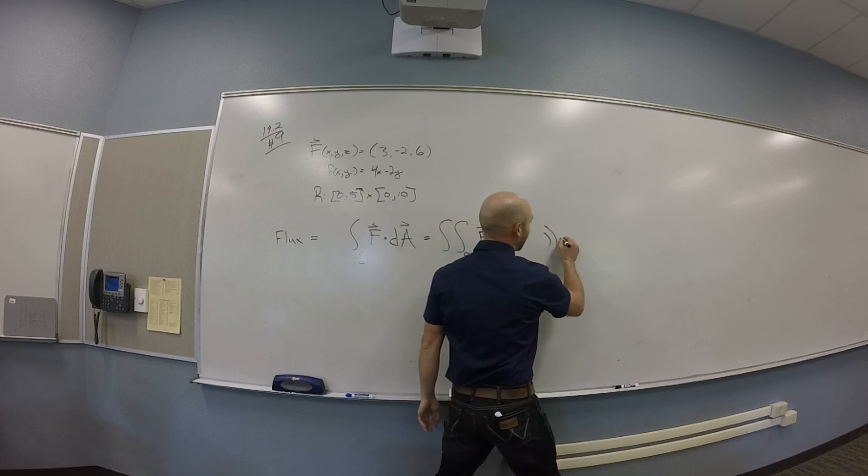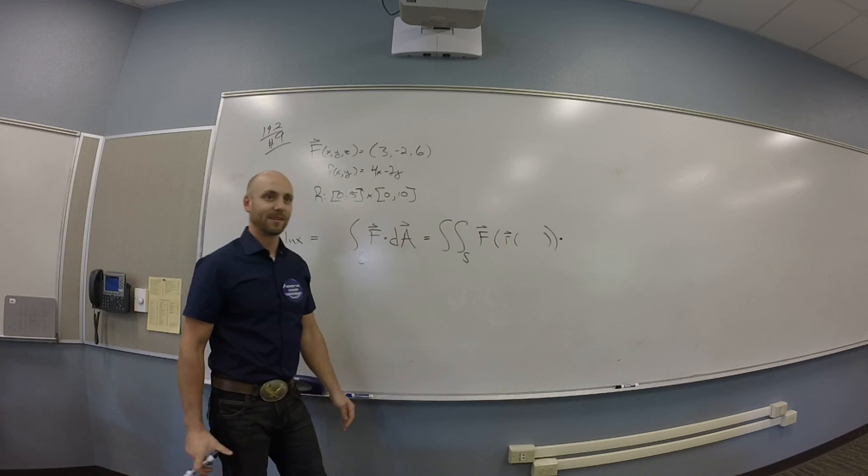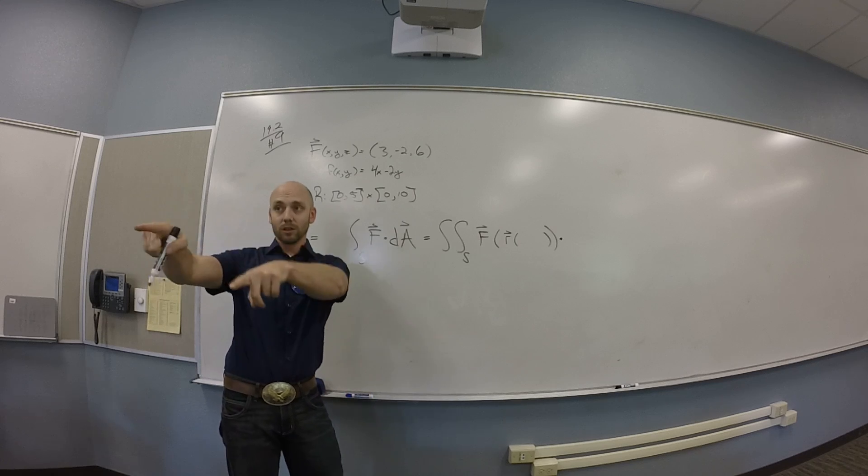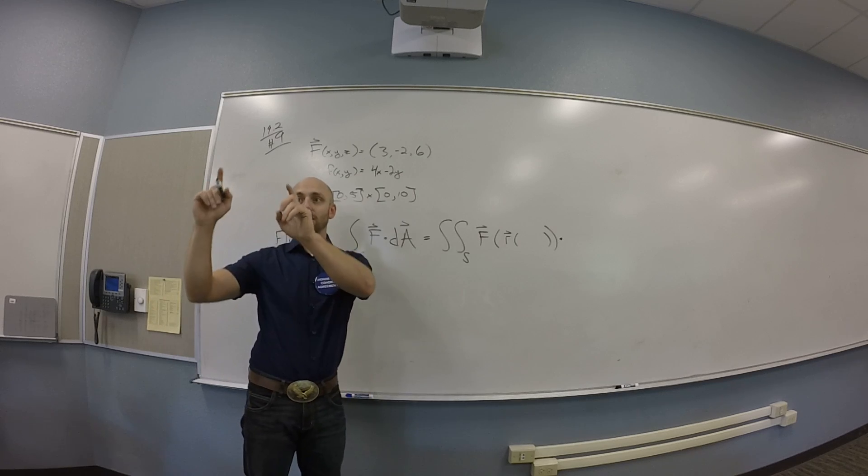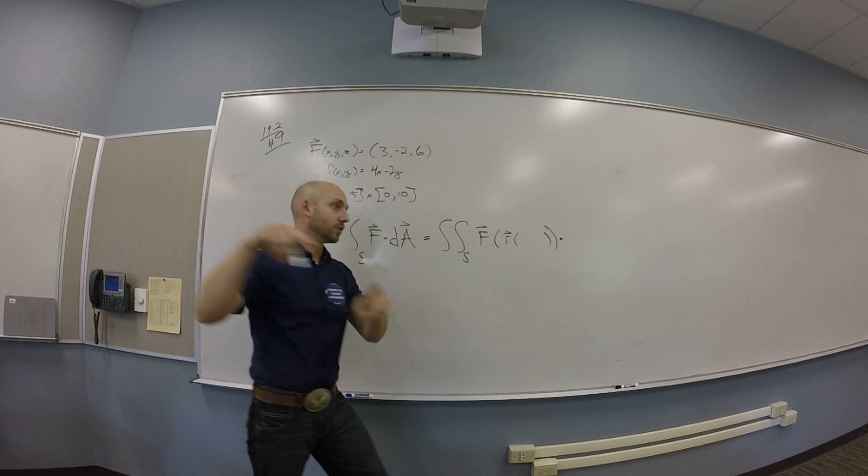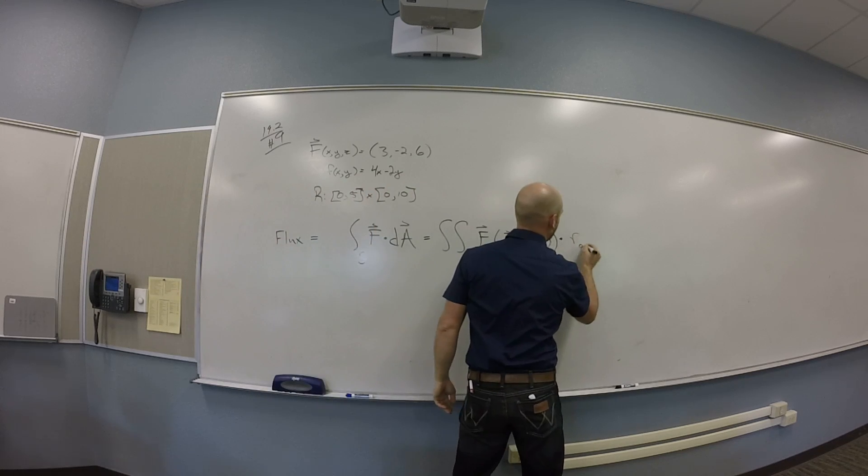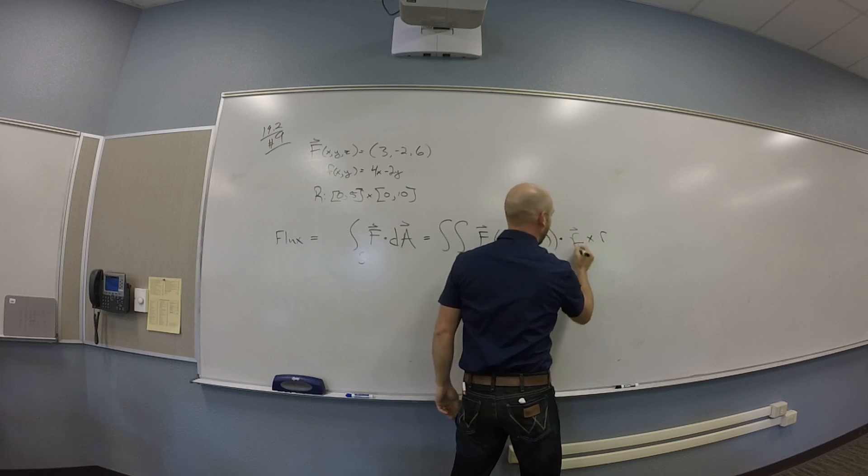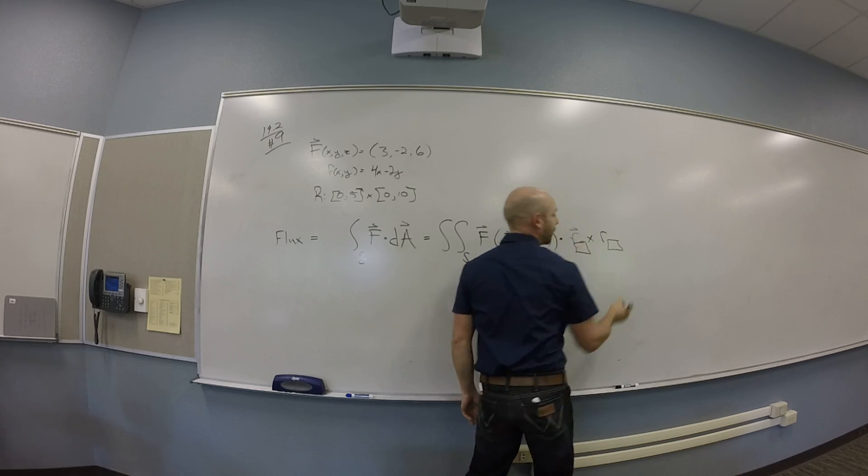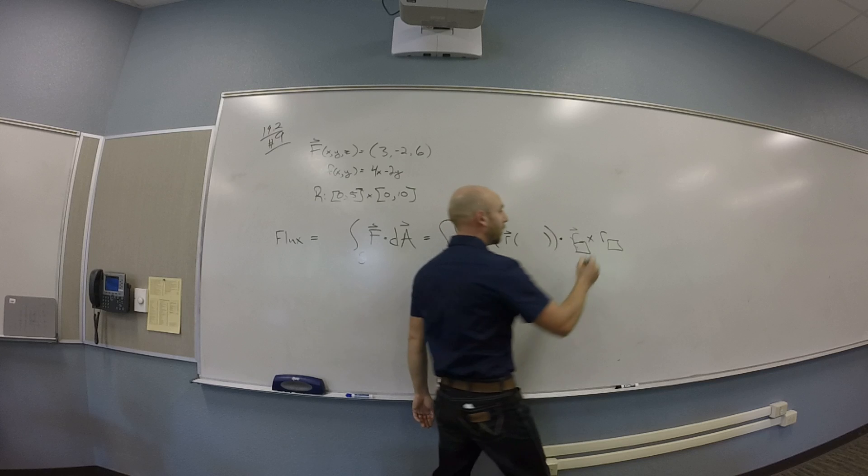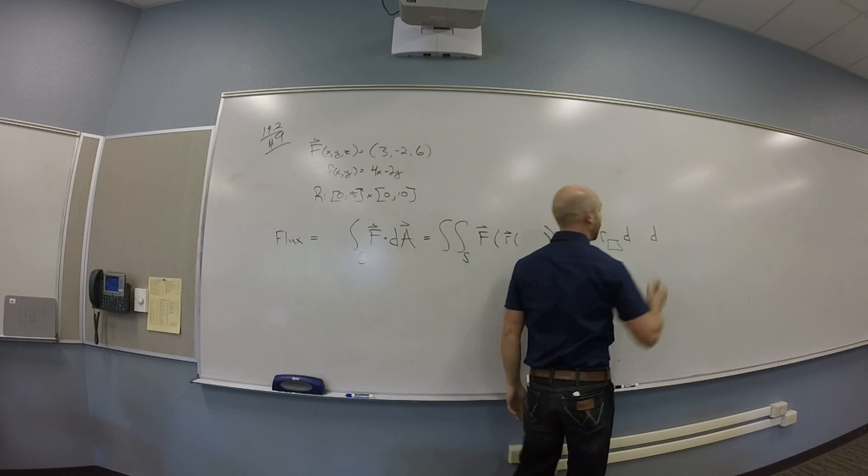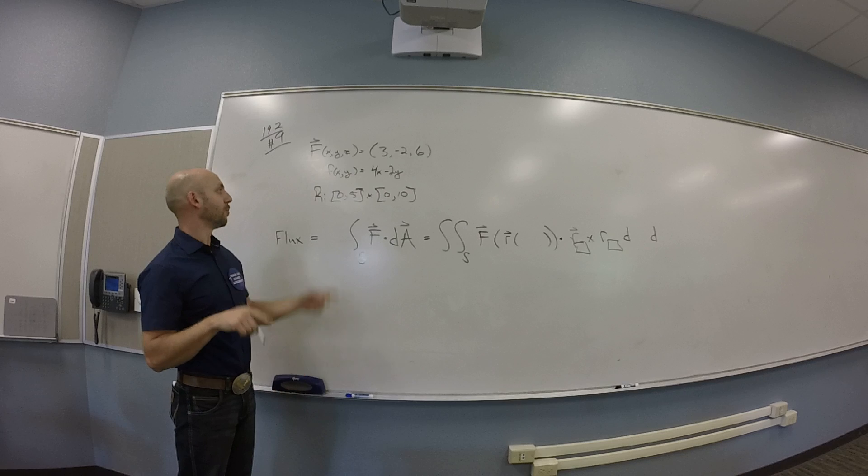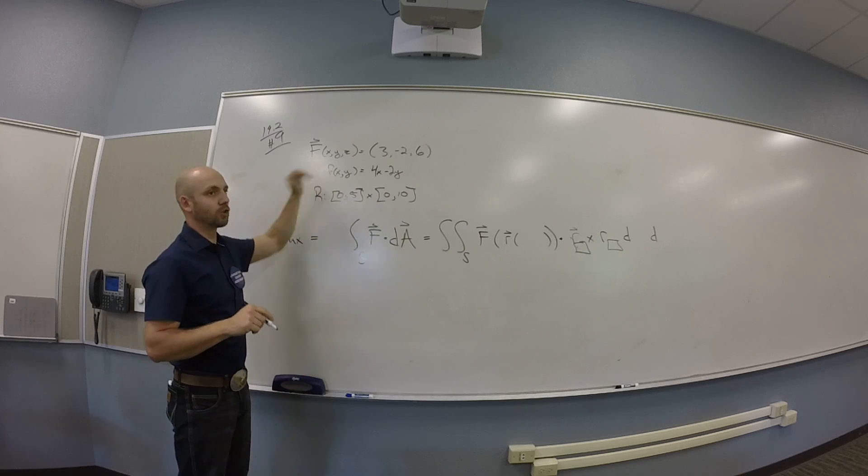So this is just going to be your vector field anyway. And then you need to dot with the cross product of the partials. Partials of R and whatever. That's like the orientation they want. So there's kind of a blank spot here that I need to fill in, right? And then I'm going to integrate with respect to those two things you're filling in. So what's your parameterization for a function's graph?